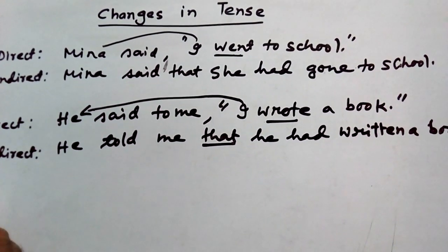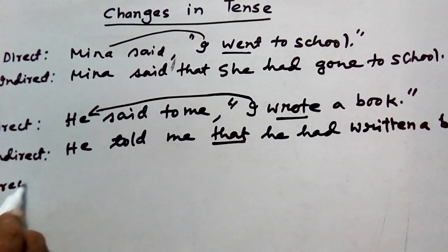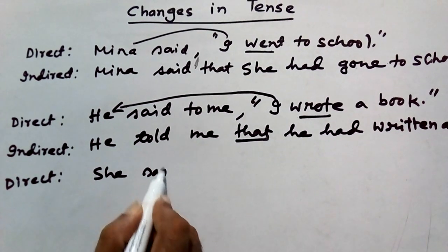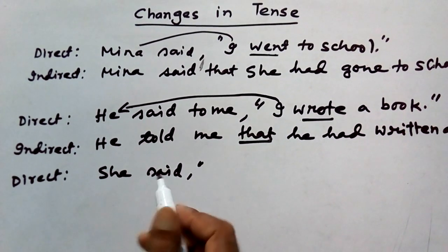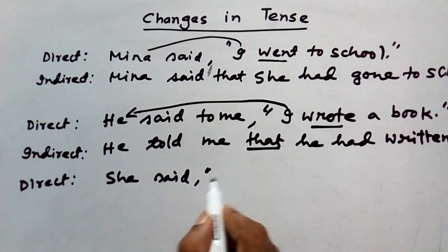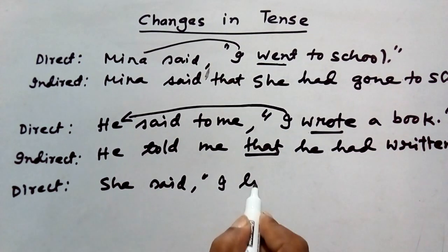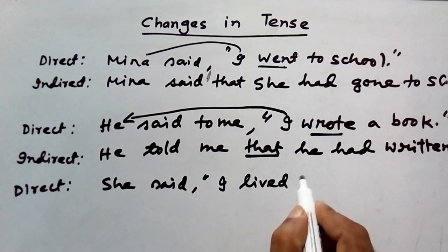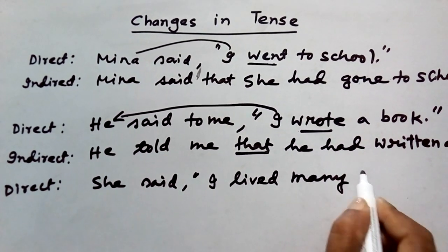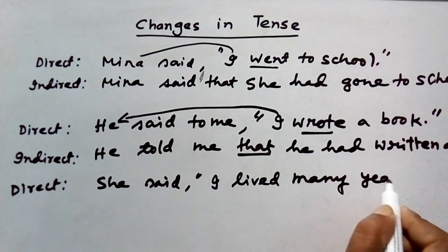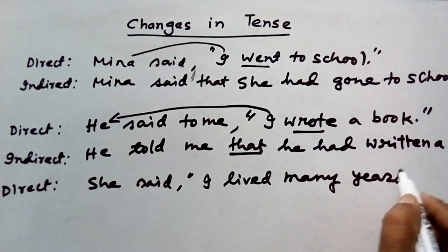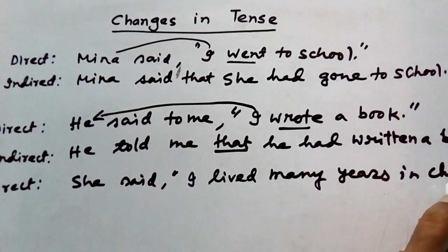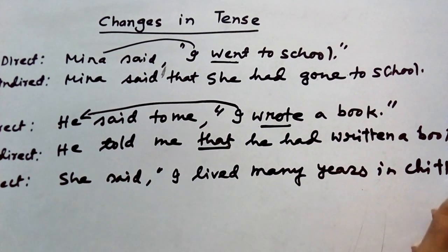There is another example. She said, comma, inverted comma: 'I lived many years in Chira.' This is our third direct speech example to be converted into indirect speech.